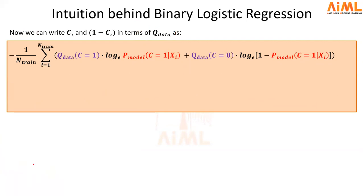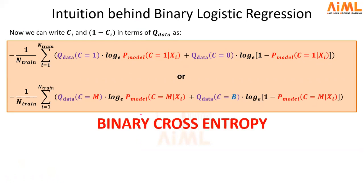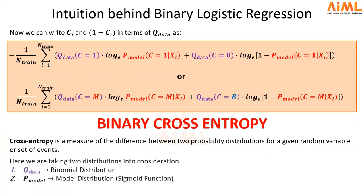Now you can see that everywhere in our loss function there are different probabilities. You can also write your loss function in this manner — you can choose one of these forms; it doesn't matter. But from now onwards, our loss function will be called binary cross-entropy. Why binary? Because we have only two categories: malignant and benign. Cross-entropy is actually the measure of the difference between two probability distributions — that is, how much two probability distributions are different from each other — defined on a random variable or set of events. The two probability distributions in our case are Q_data and P_model. Q_data is the binomial distribution; P_model is the model distribution, which is actually the sigmoid function.